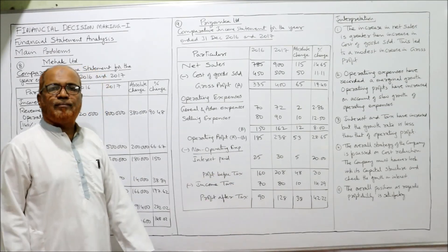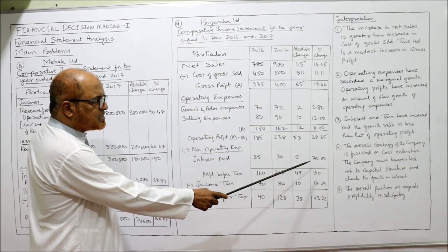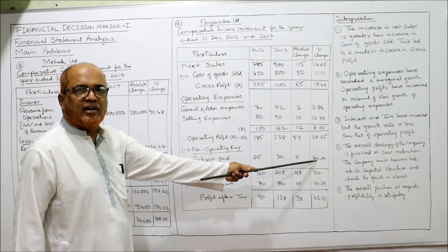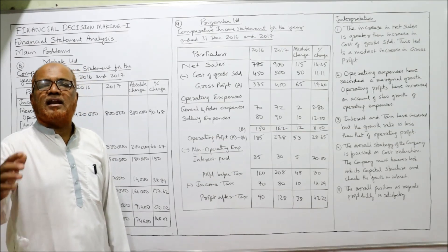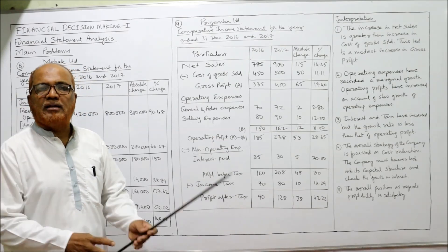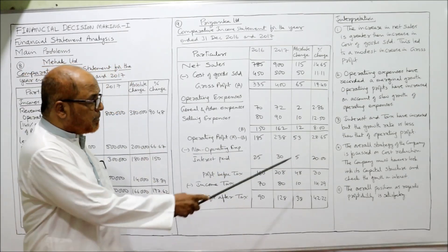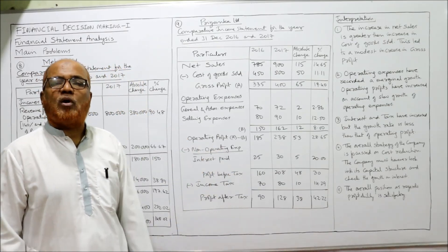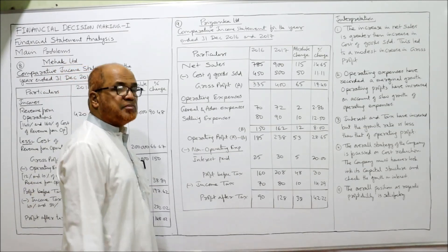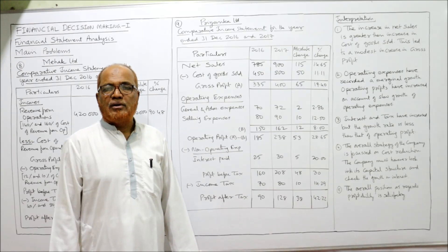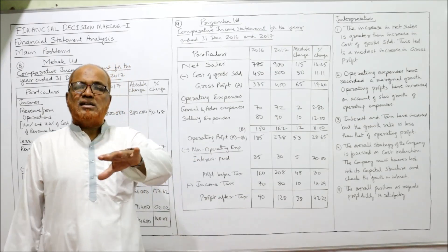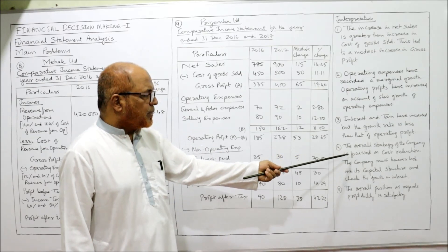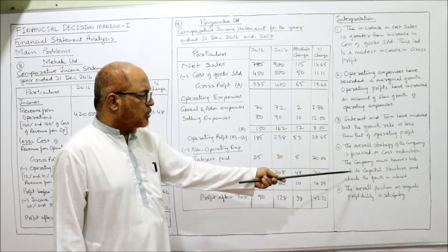Interest is increasing by 20% and tax by 14.29%, both lower than operating profit growth of 28.32%. That's why there is a big jump in profit after tax, which increased by 42.22%. The overall strategy of the company is focused on cost reduction. The company must however look into the capital structure and check the growth of interest charges.